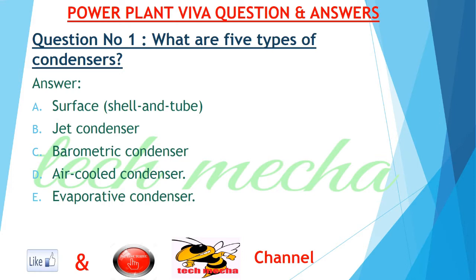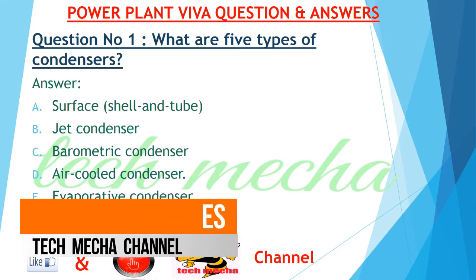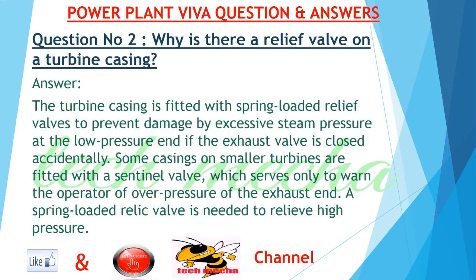Question number 1: What are 5 types of condensers? Answer: 1. Surface, shell and tube. 2. Jet condenser. 3. Barometric condenser. 4. Air-cooled condenser. 5. Evaporative condenser.